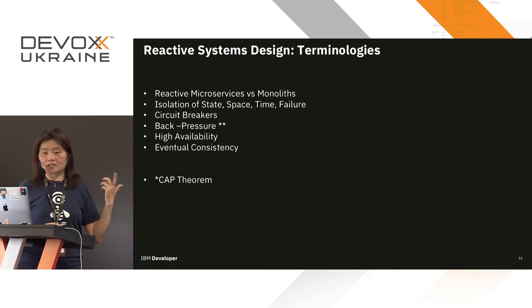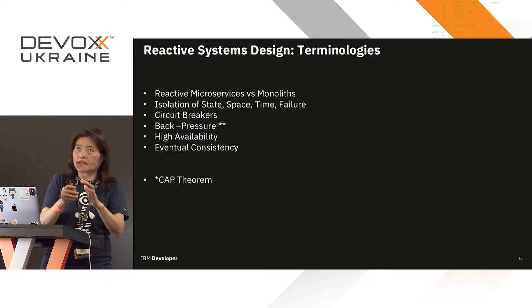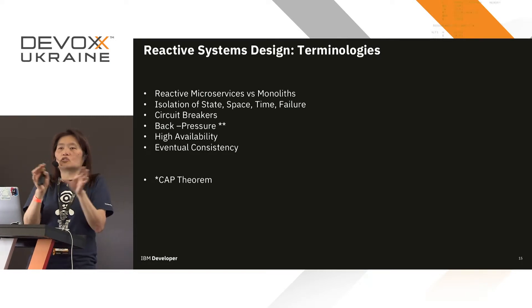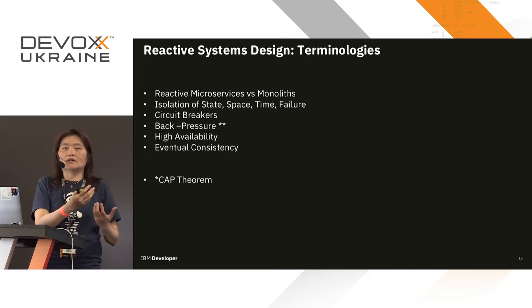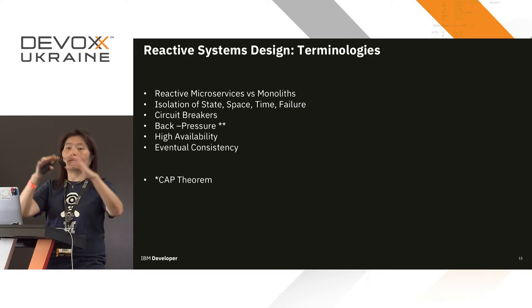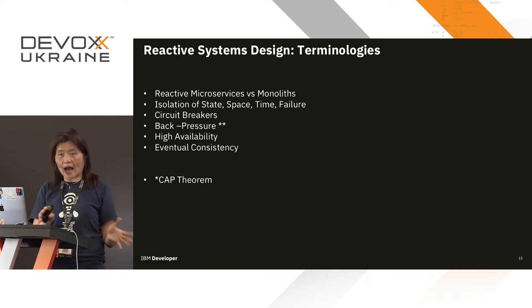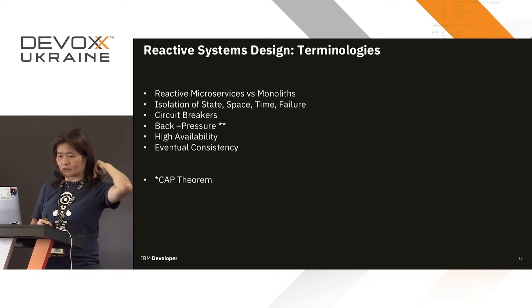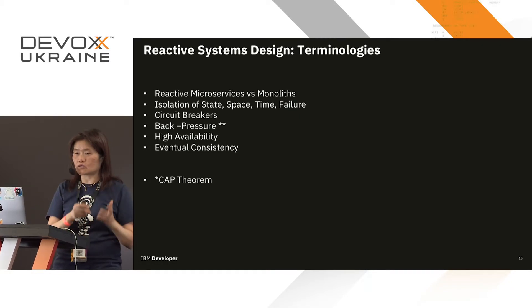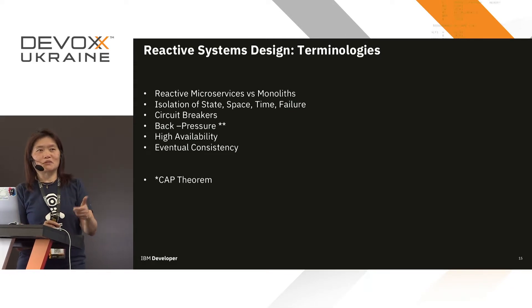Reactive systems lend themselves really well to transforming legacy systems into microservices. They're meant to be loosely coupled, which is perfect for breaking up a monolith into multiple microservices, each handling their own specific tasks yet forming a consistent processing story for the whole system. Reactive systems isolate state, space, time, and failure.